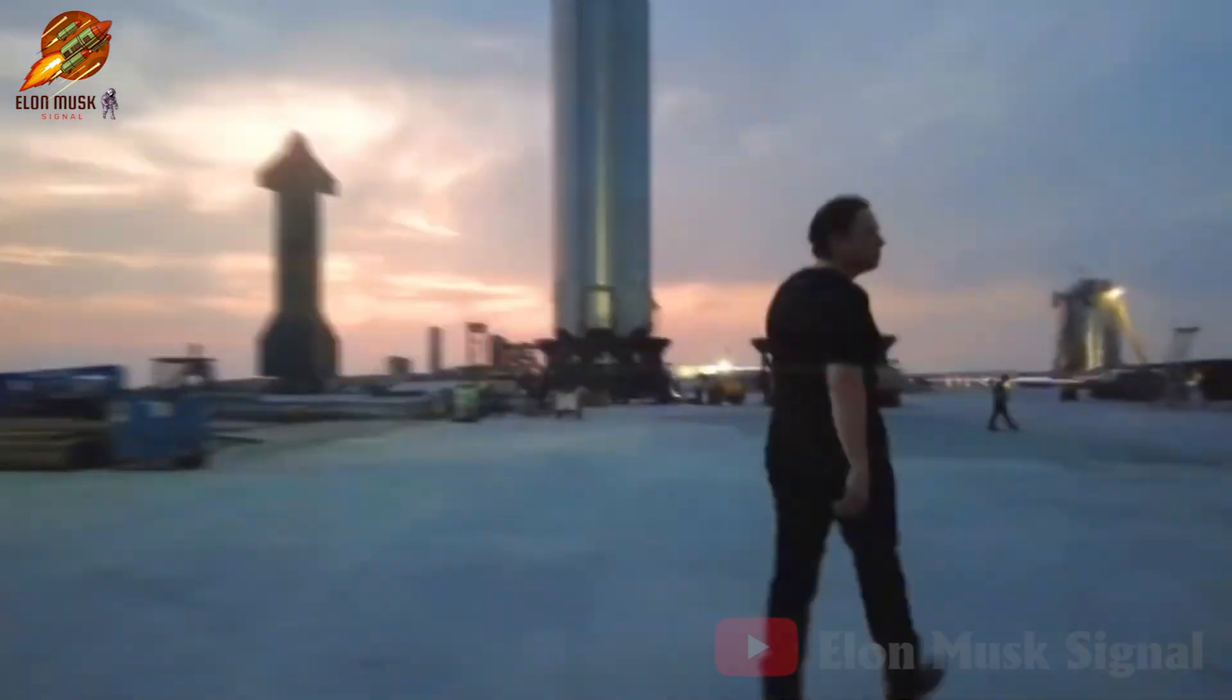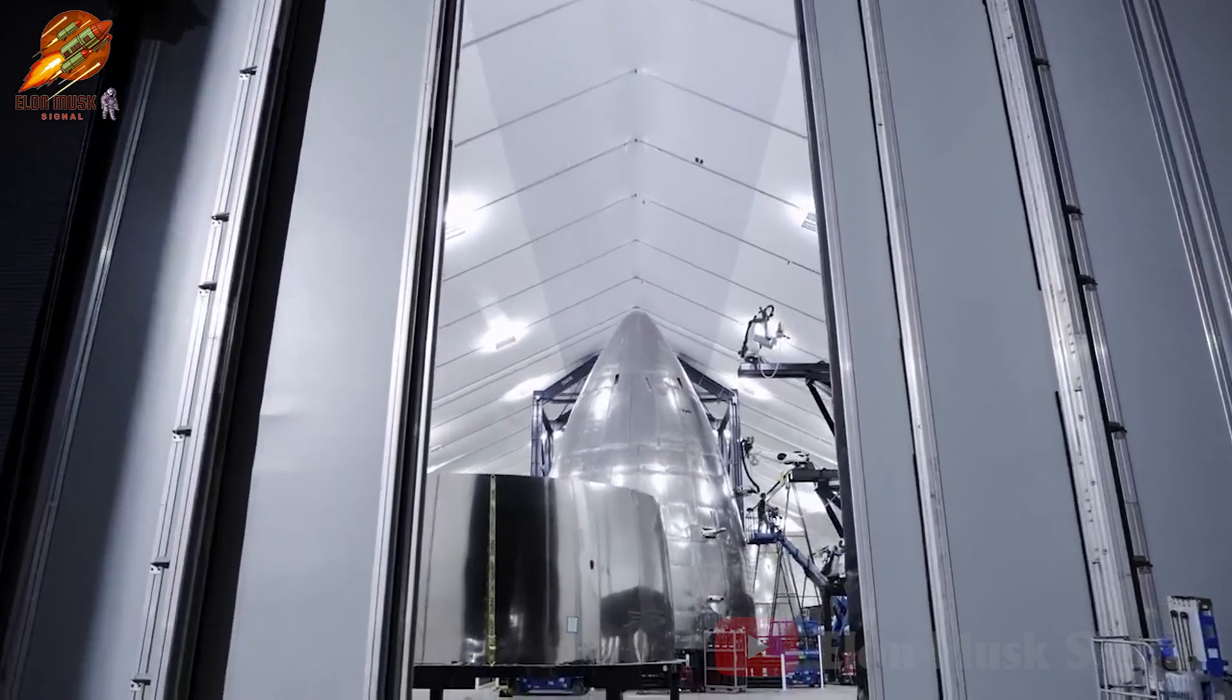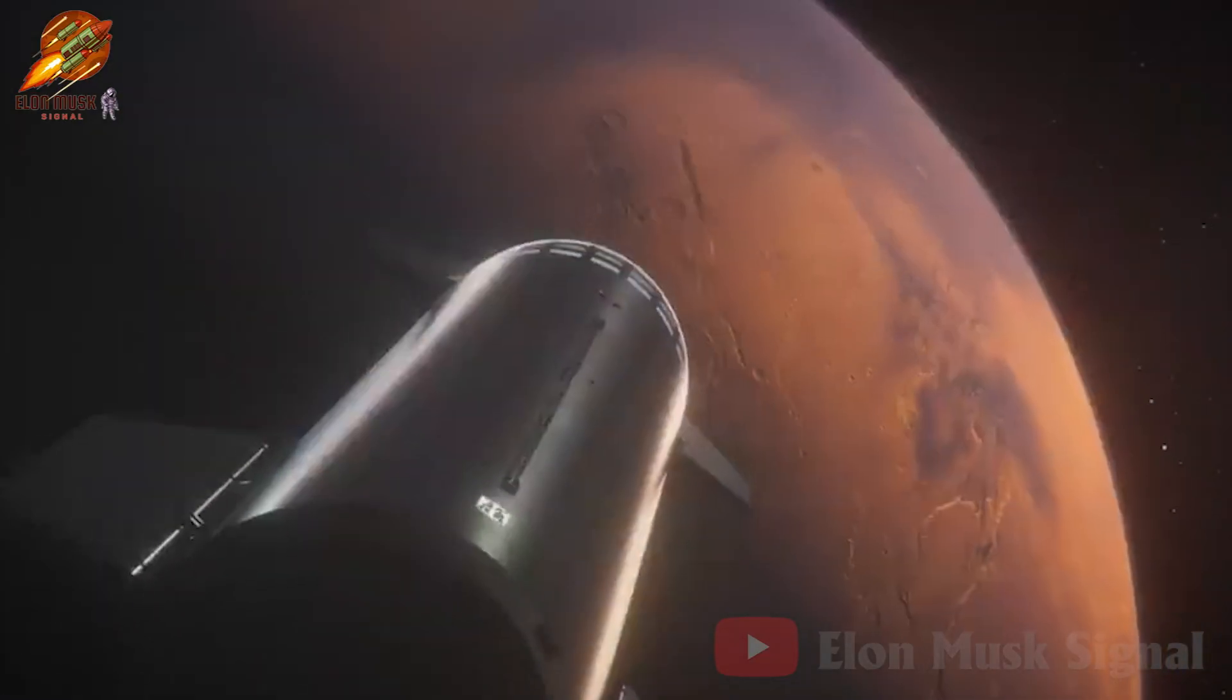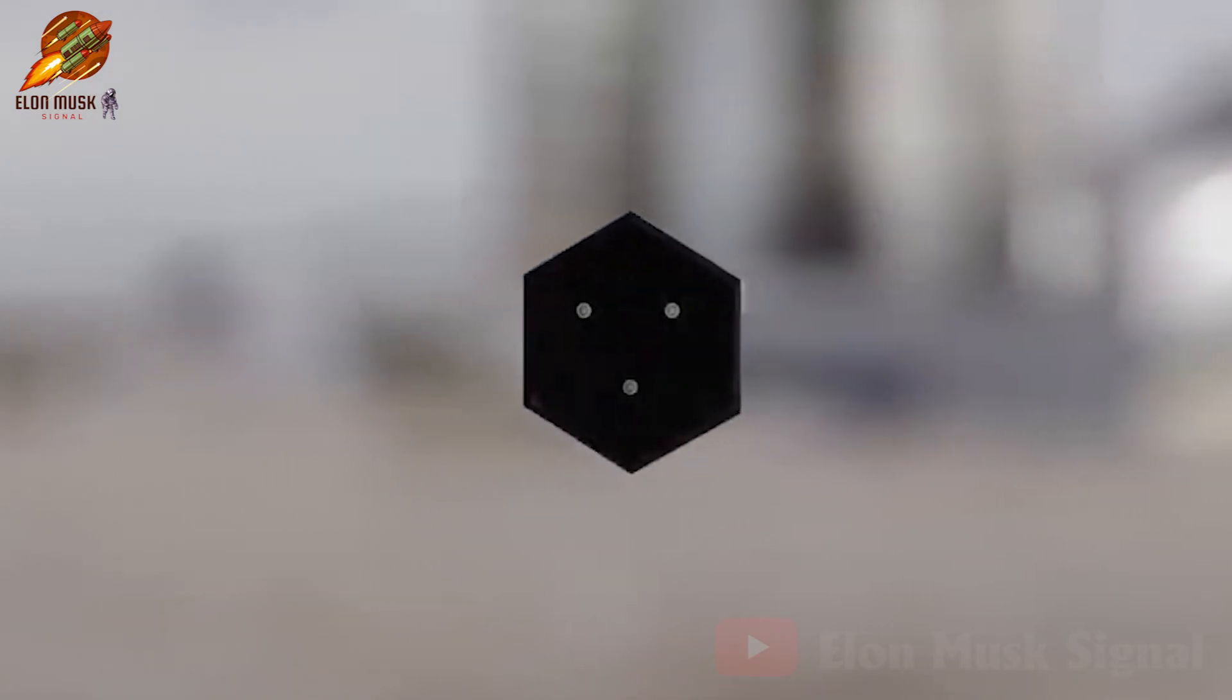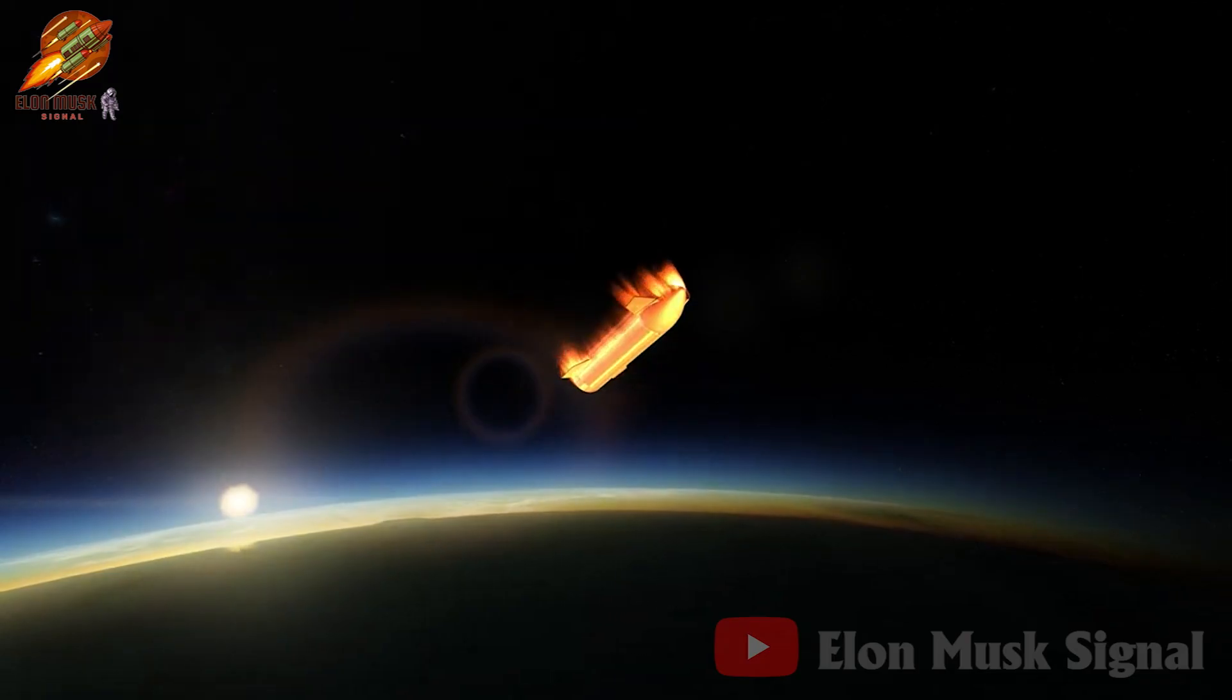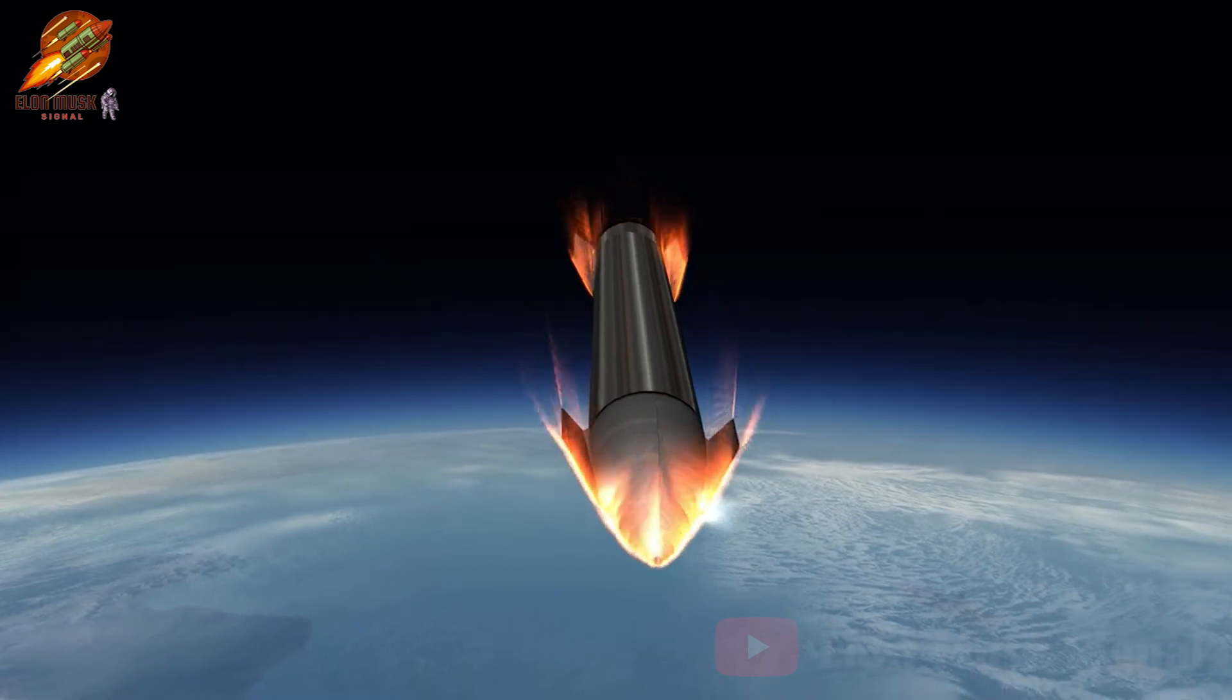Welcome to the Elon Musk Signal Channel. SpaceX is striving to develop Starship, an ambitious spacecraft aimed at sending humans to Mars and exploring other planets. One of the most crucial components of Starship is its heat shield, designed to protect the spacecraft from intense heat during re-entry into Earth's atmosphere.